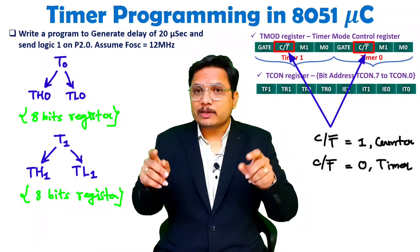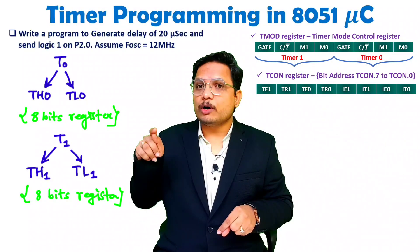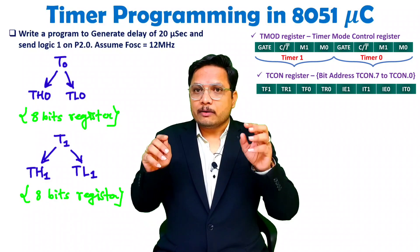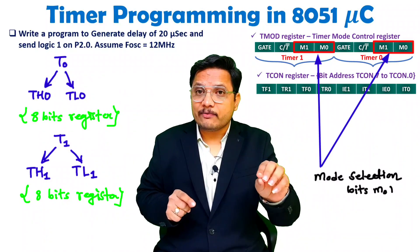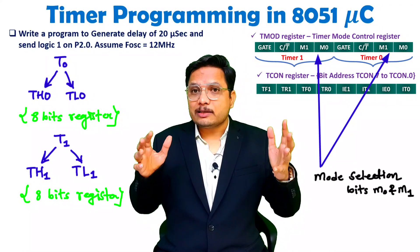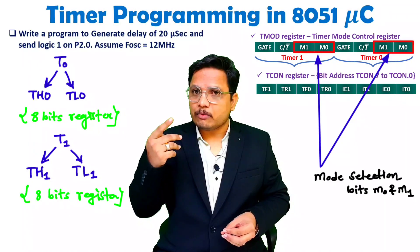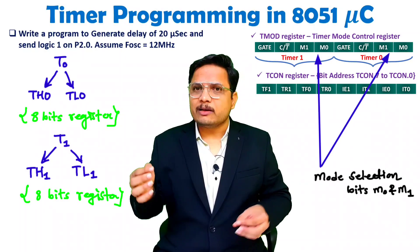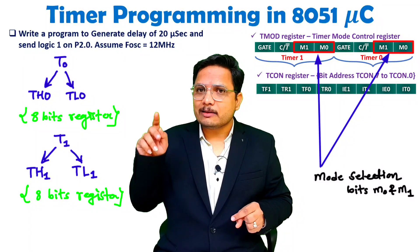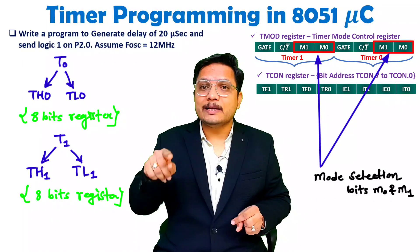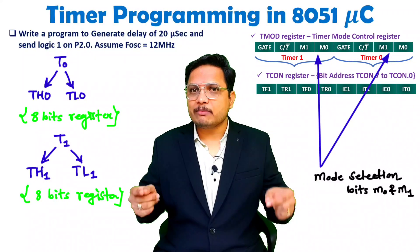Once you understand the CT bar bit, you need to understand in which mode you want to operate. M0 and M1 — two bits — are there for Timer 0 and Timer 1, and they define in which mode the timers will work. There are four modes: Mode 0, Mode 1, Mode 2, and Mode 3. Generally we use Mode 1 only, so you set those two bits as 0 and 1. The reason is that maximum count is possible in Mode 1.